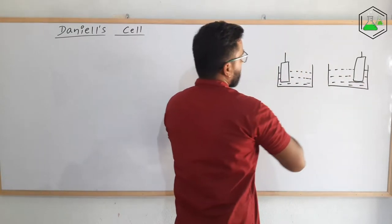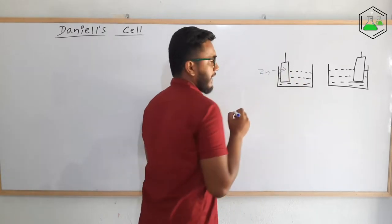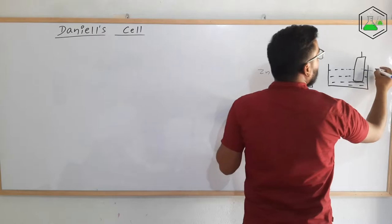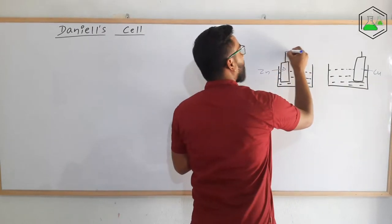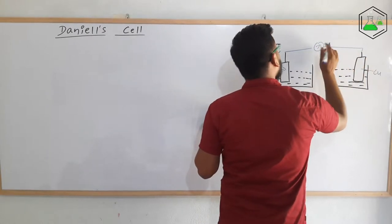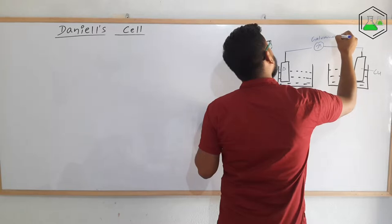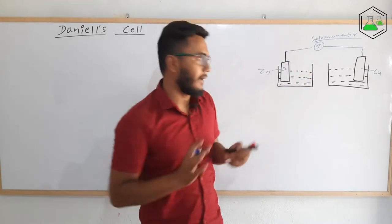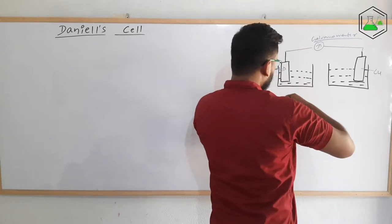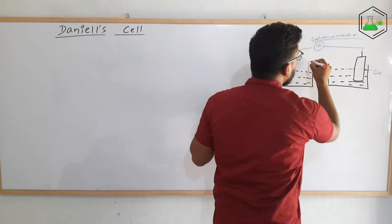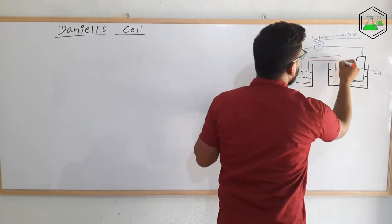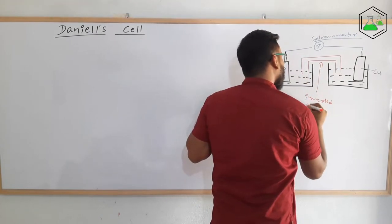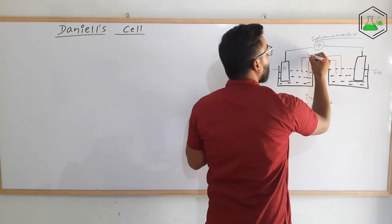The first metal in the first beaker is zinc, and the second metal in the second beaker is copper. They are joined by an insulated wire, and a galvanometer is kept over here so that we can detect the flow of electrical current. They are also joined by an inverted U-tube — this is the inverted U-tube — which is also called a salt bridge.